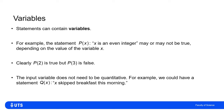The input variable doesn't need to be a number — it doesn't need to be quantitative; it could be something qualitative or a label. For example, Q(X) could be the statement 'X skipped breakfast this morning.' You put your own name in for X, and if you skipped breakfast this morning, Q(your name) is true, whereas if you ate breakfast this morning, Q(your name) would be false.